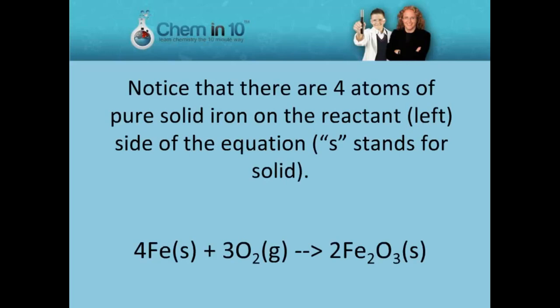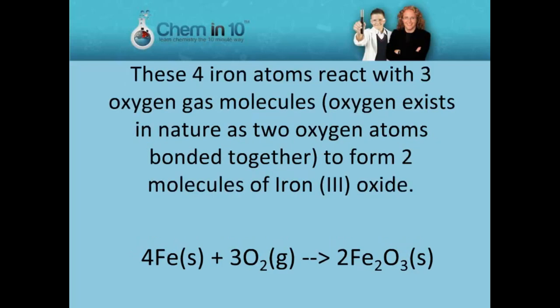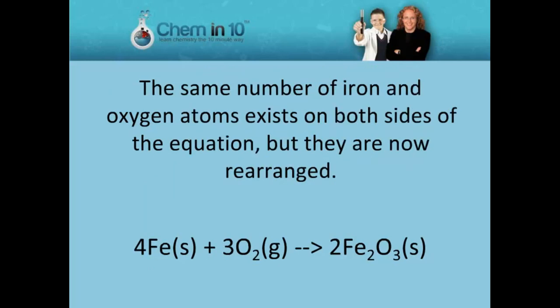The reaction is 4 iron atoms react with 3 oxygen molecules to produce 2 molecules of iron 3 oxide. Notice that there are 4 atoms of pure solid iron on the reactant left side of the equation. S stands for solid. These 4 iron atoms react with 3 oxygen gas molecules. Oxygen exists in nature as 2 oxygen atoms bonded together to form 2 molecules of iron 3 oxide. The same number of iron and oxygen atoms exists on both sides of the equation, but they are now rearranged.